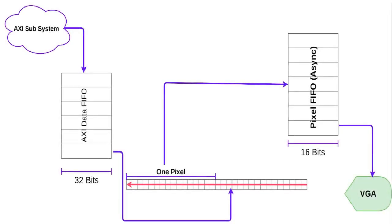This diagram shows an overview of what we want to achieve. The actual data stored in SD-RAM will be received via the AXI subsystem, which in turn will store it in the FIFO. This FIFO is 32 bits wide, so every element is 32 bits wide, whereas every pixel data is only 16 bits wide — so in effect every element stored in this FIFO contains 2 pixels.